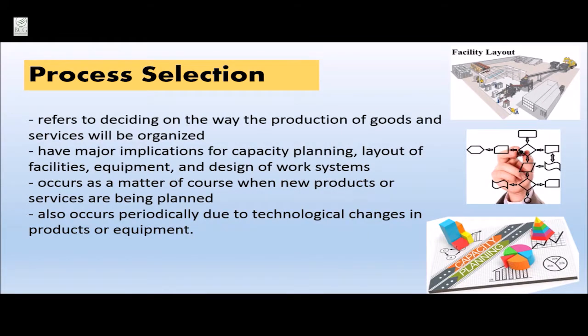Process selection refers to deciding the way the production of goods and services will be organized. This step is vital as it will have major implications for capacity planning, layout of facilities, equipment, and design of work systems. Process selection occurs as a matter of course when new products or services are being planned, but it also occurs periodically due to technological changes in products or equipment.